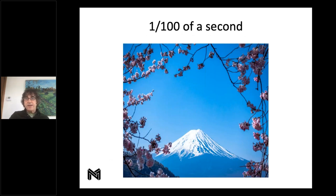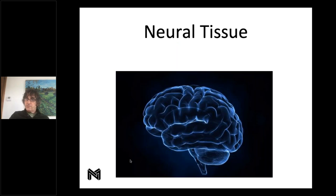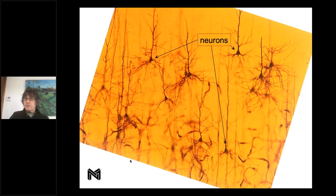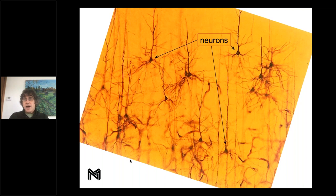You're looking at a photo and most of you can tell that this is Mount Fuji, and that takes you about a hundredth of a second to do. Neural tissue — that thing between your ears — enables you to recognize images extremely fast. Our brains are made of neurons that are interconnected among each other and have a kind of firing pattern.